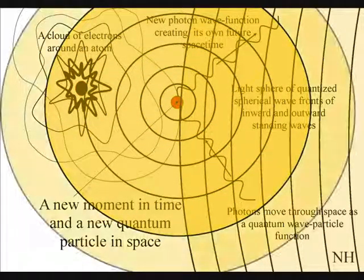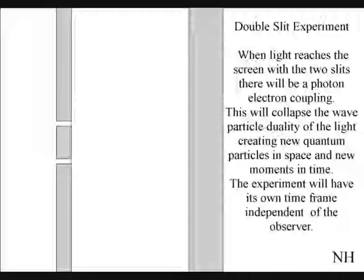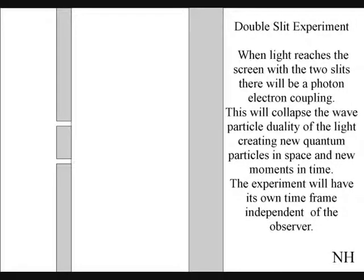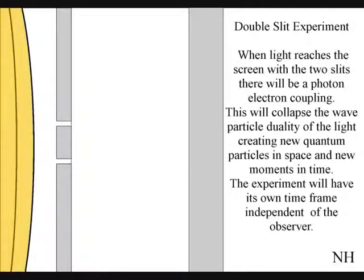The best way to see this happen directly with light is in the double slit experiment. The light will expand in all possible directions as a wave particle function. When it reaches the screen with the two slits, the photon will react with the electrons of the screen. This will collapse the wave particle duality of the light, creating new moments in time and new quantum particles in space.